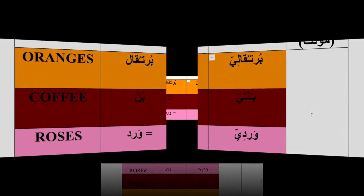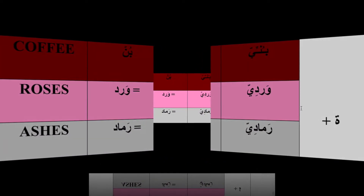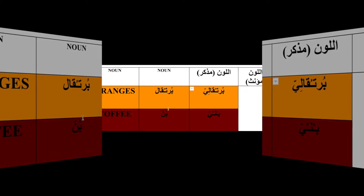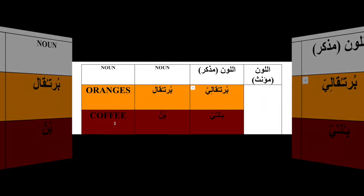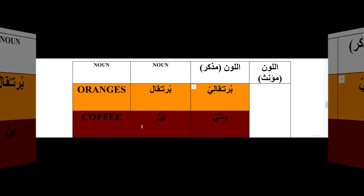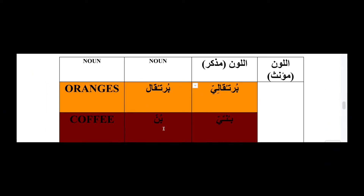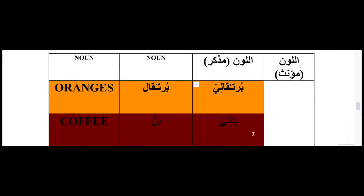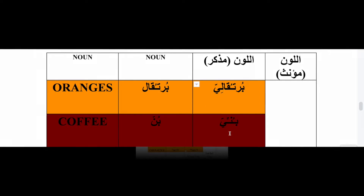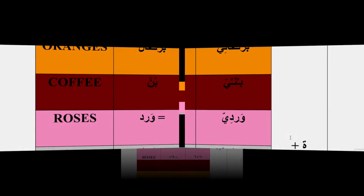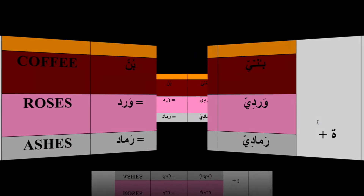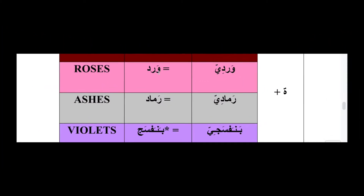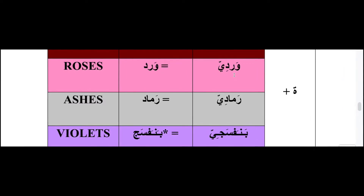Coffee in its natural state, like coffee beans, is called بن (you may know it as قهوة). The adjective form is بني in the masculine and بنية in the feminine, adding التامربوطة. Roses are called ورد in Arabic, and وردي is the adjective for pink or rose-colored.